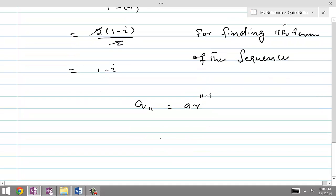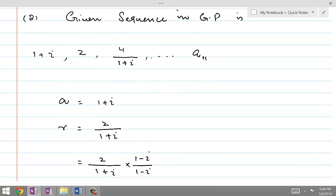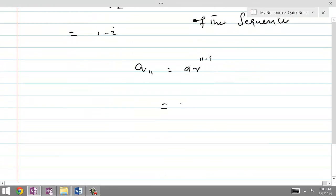Therefore we have A11 is equal to 1 plus iota times R, which is 1 minus iota to the power 10. And if we take out 1 plus iota times 1 minus iota times 1 minus iota to the power 9, we know 1 plus iota times 1 minus iota is 2, so this can be written as 2 times 1 minus iota to the power 9.